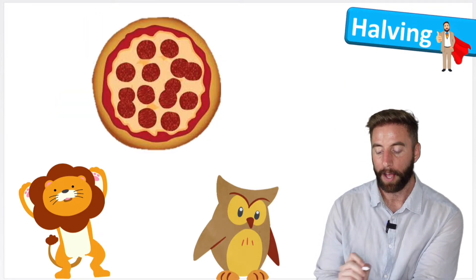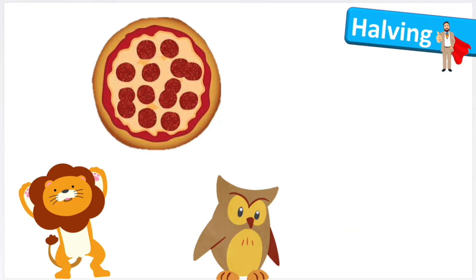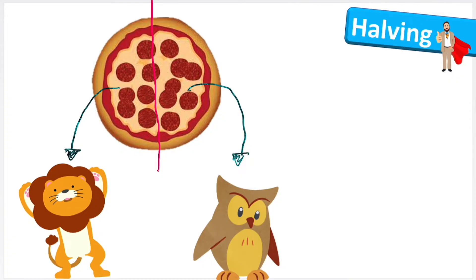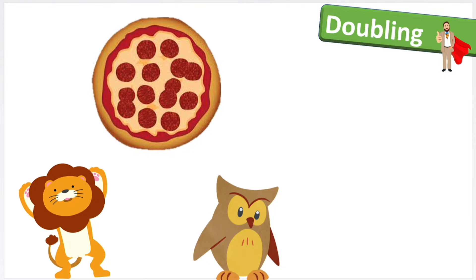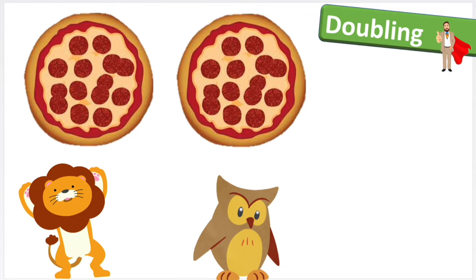Let's have a look at it in a different way. I've got this one pizza here and I want to halve it. So to halve it, I'm going to get my pizza cutter and cut it right down the middle. Now this half is going to go to the greedy lion and this half is going to go to my greedy owl. So it's not just multiple items I can cut in half — I can actually cut one in half as well. I had one pizza and now I have half for my lion and half for my owl. And if I want to double it, I'm going to end up getting a brand new pizza, so now I've got two.